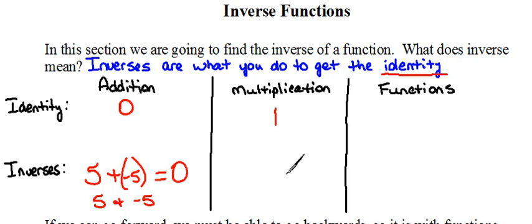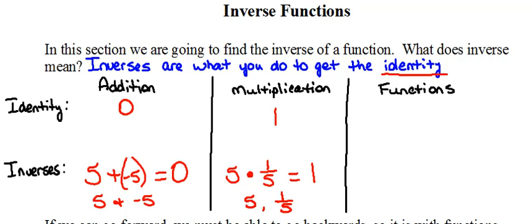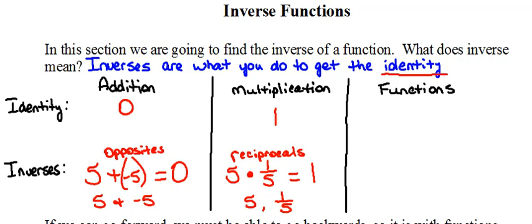So let's think about inverses under multiplication. We'll take the number five again. What would you have to multiply by five to get the identity of one? That would be one-fifth. So five and one-fifth are inverses under multiplication. These also have another name — they're called reciprocals. Reciprocals are inverses for multiplication, and back on addition, opposites are inverses under addition.